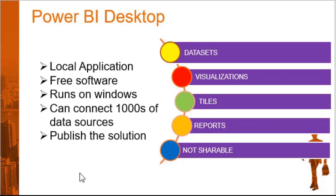The first and foremost building block is datasets. A dataset is your own data model. When we connect to any data source — for example, Excel — and import a file, that file is internally converted into a dataset. There are basically two kinds of datasets we can create. The first is a built-in dataset: by connecting to existing data sources, Power BI converts that data into a dataset so we can model it.